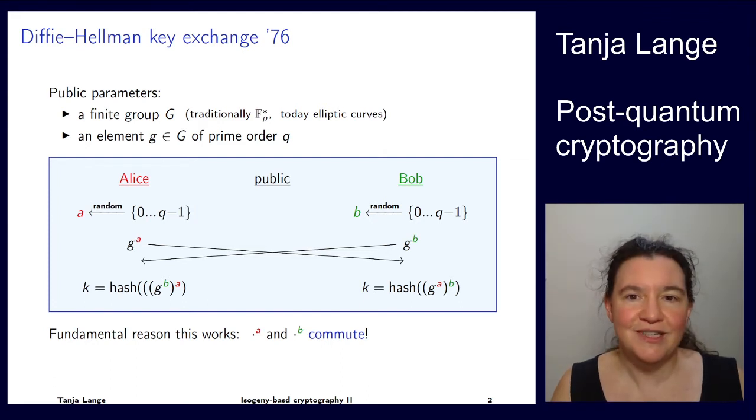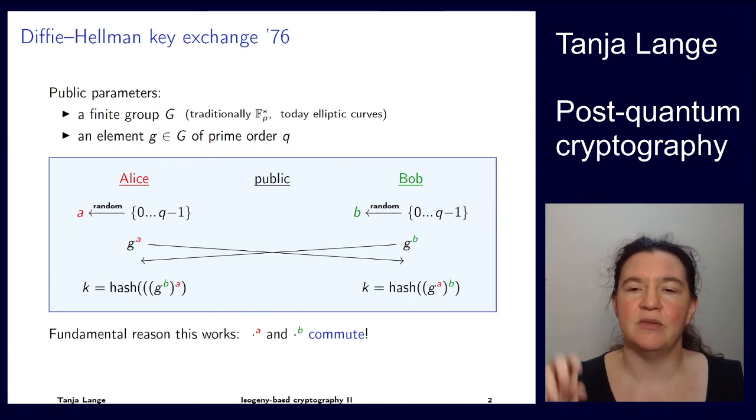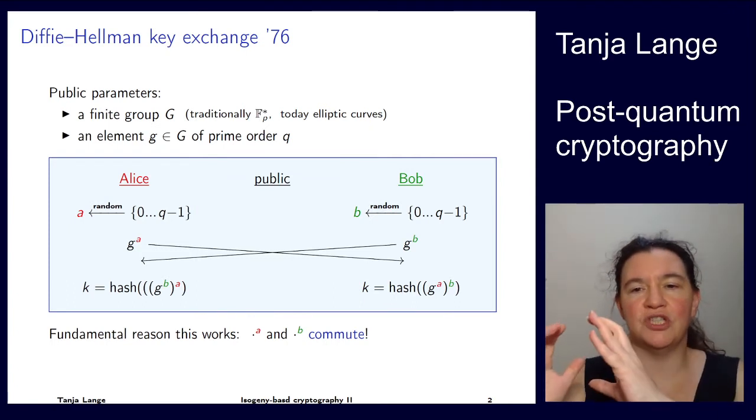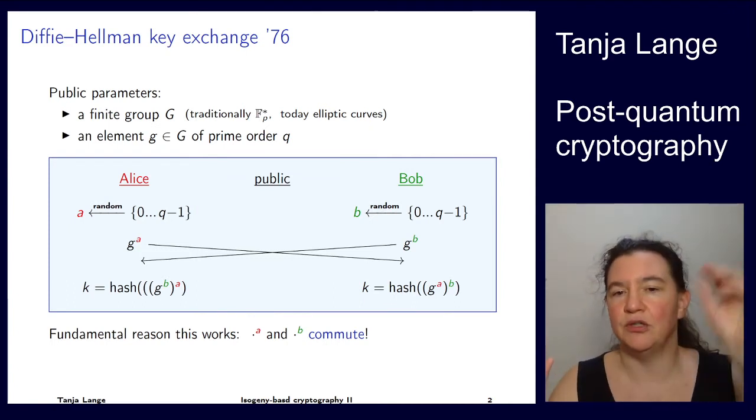So it doesn't matter whether you first compute to the A and then to the B or first to the B and then to the A. So that is kind of, duh, we've been seeing this since many years. You learned in school that G to the AB is the same as G to the BA, and it can compute as G to the A to the B or G to the B to the A.